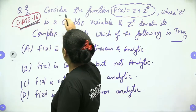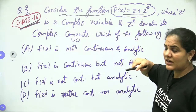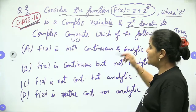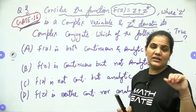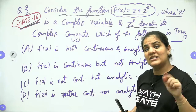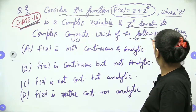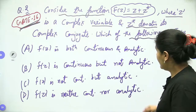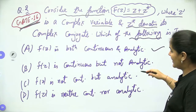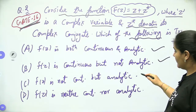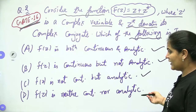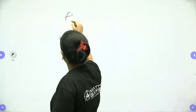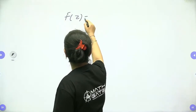Now let's move to the next question, asked in GATE 2016. Consider the function f(z) equals z + z*, where z is a complex variable and z* denotes its complex conjugate (also written z̄). Which of the following is true: (1) f(z) is both continuous and analytic, (2) continuous but not analytic, (3) not continuous but analytic, or (4) neither continuous nor analytic?